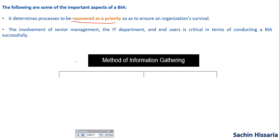Now let's see what are the methods of information gathering. In BIA, we discussed that we need to collect a lot of information from the process owner — to determine the criticality of the business process and which processes we need to recover first to continue the business. How we will gather this information — what are the methods of gathering information — this we will be discussing here.